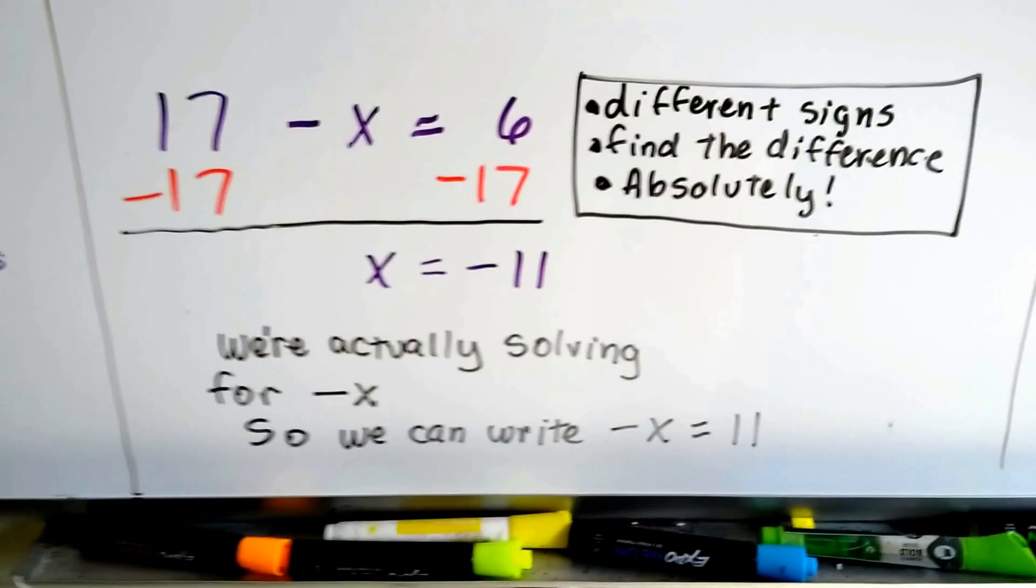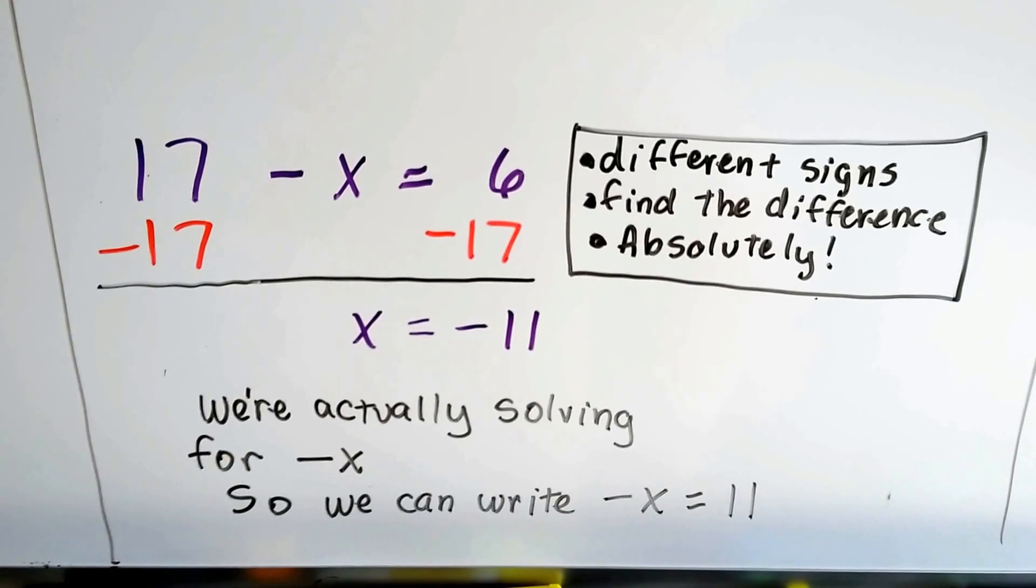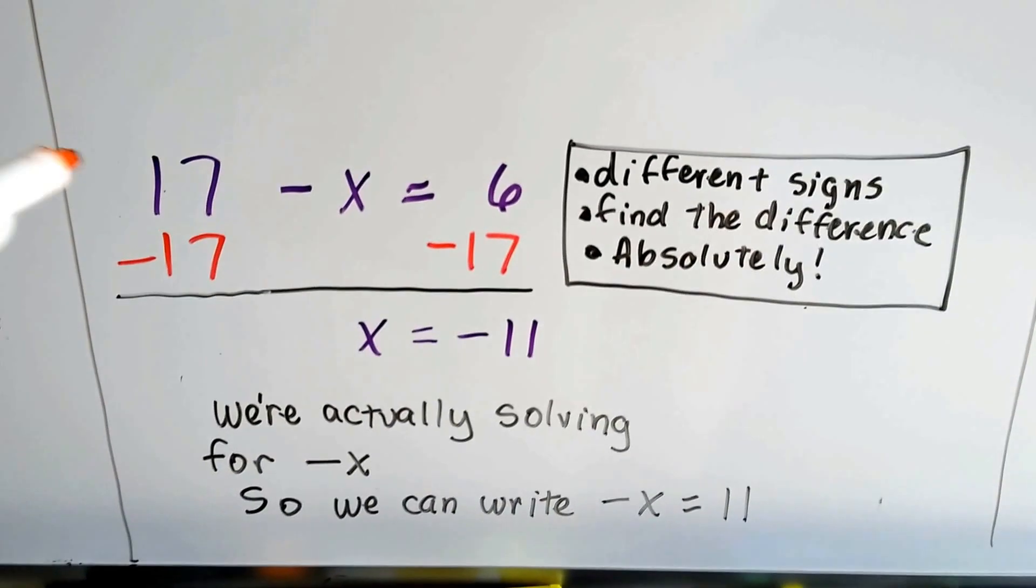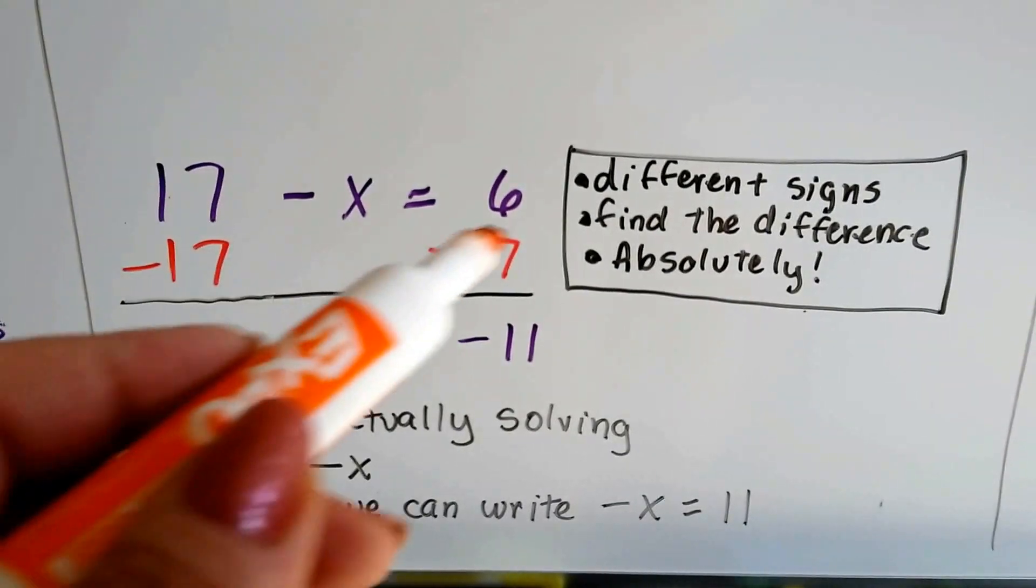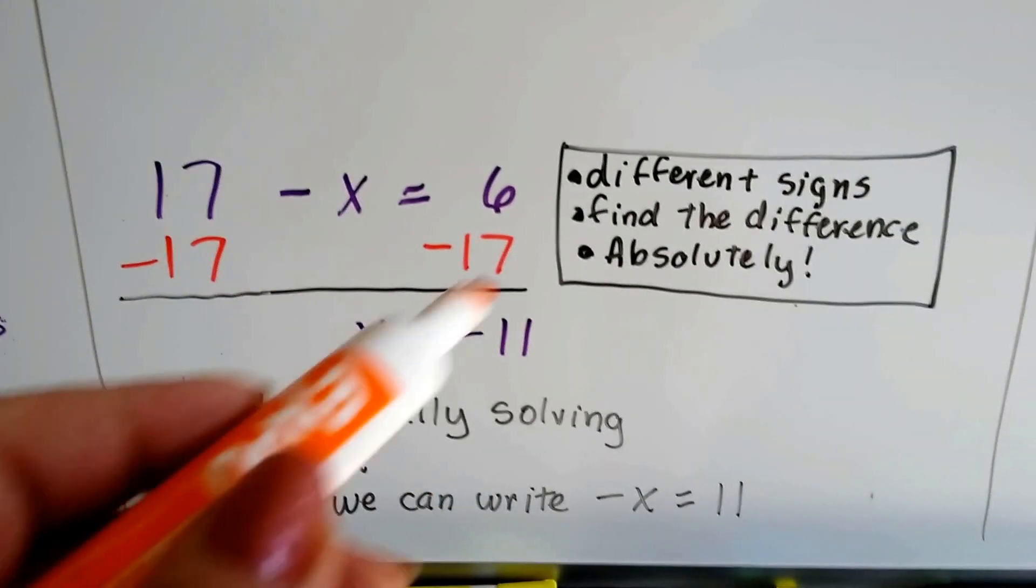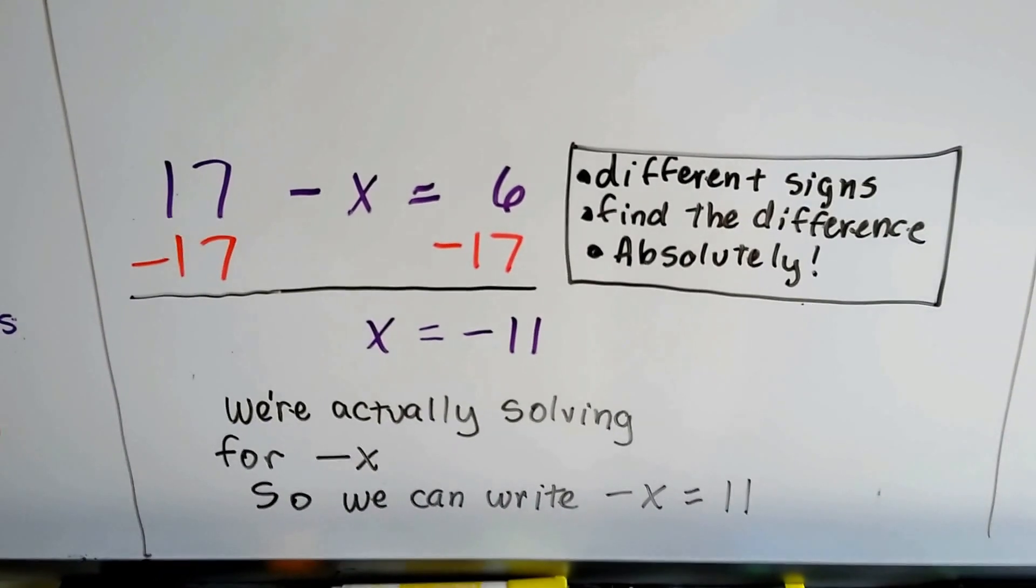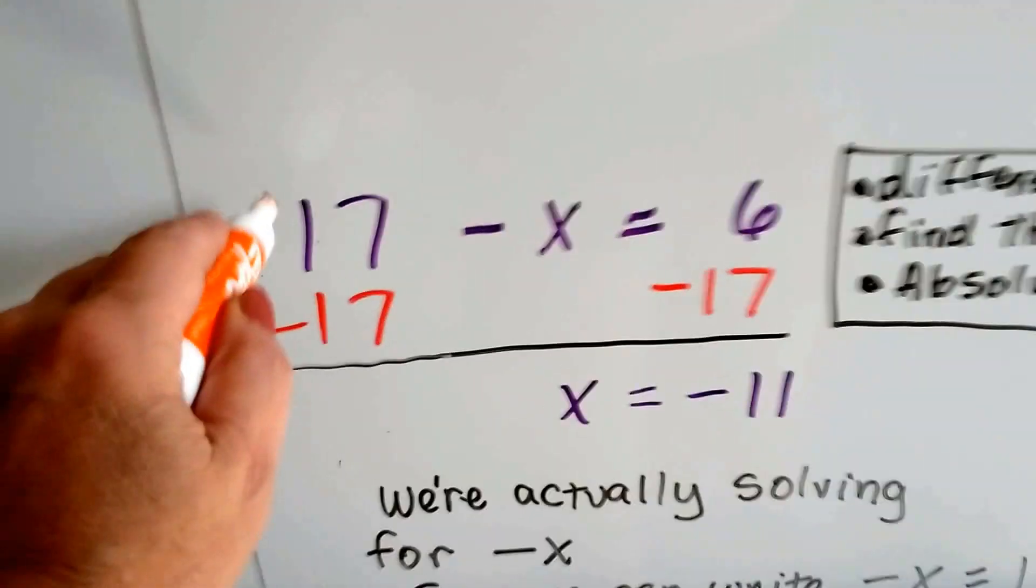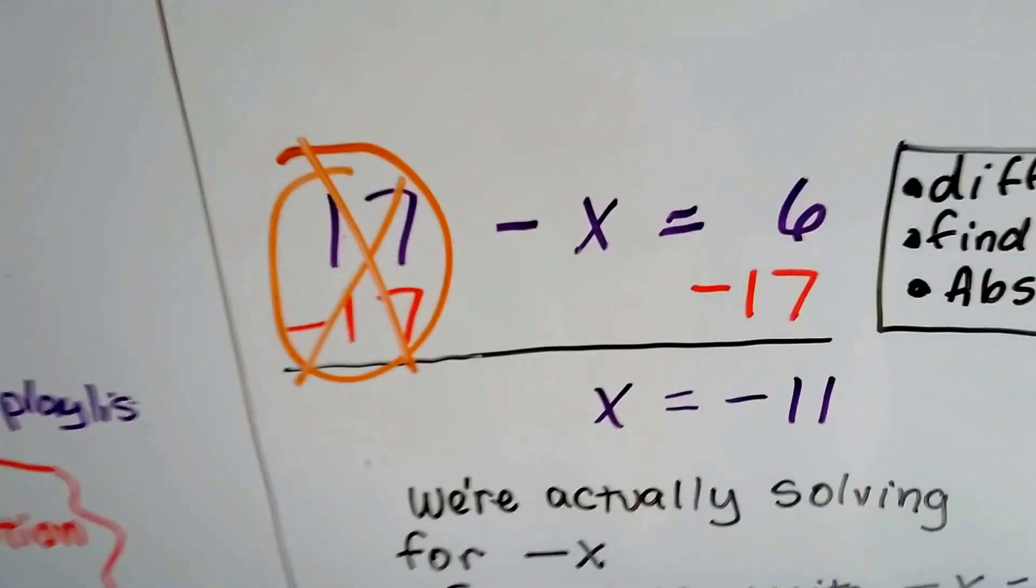Let's take a look at this one. This one's a little different. If we have 17 minus x equals 6, this is a positive 17. So we could subtract 17 from each side of this equal sign to get that x by itself, couldn't we? So we subtract the 17 from each side. We create a zero pair here and that ends up canceling out.